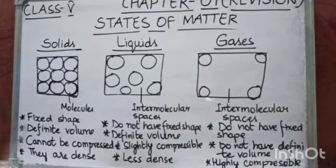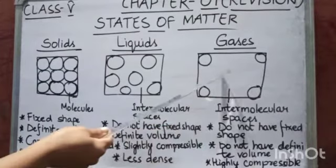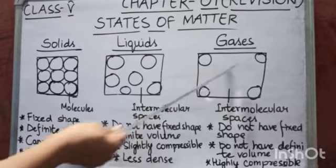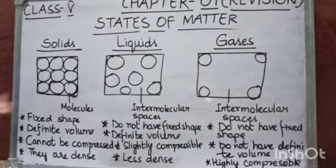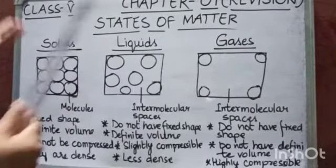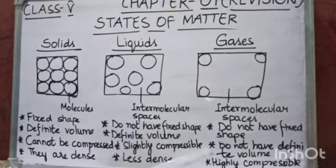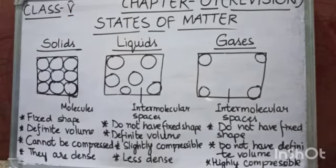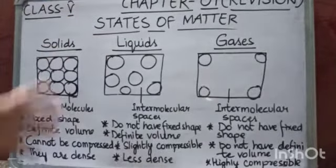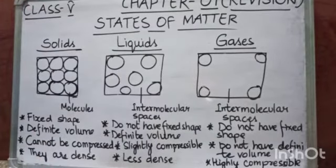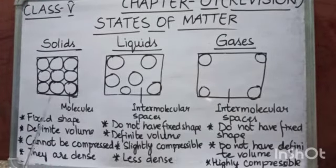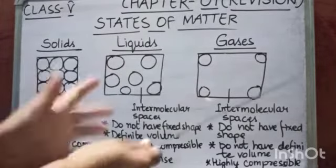Then we have gases. In gases, molecules are far apart from each other and there are large intermolecular spaces between the molecules. So gases do not have a fixed shape, and they also do not have definite volume because molecules keep moving in random directions. But they are highly compressible — if force is applied, they can compress easily.